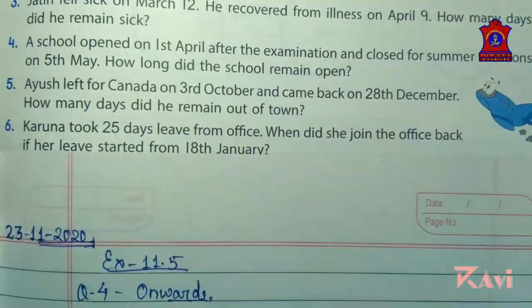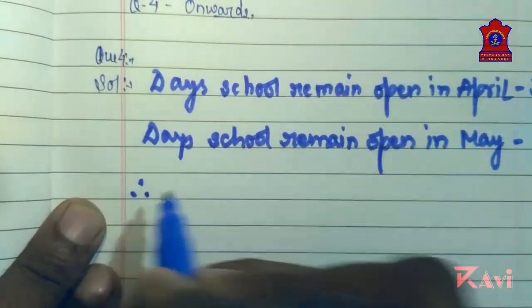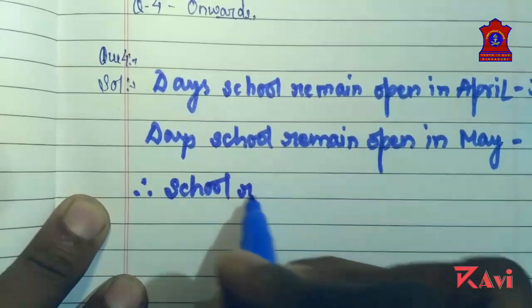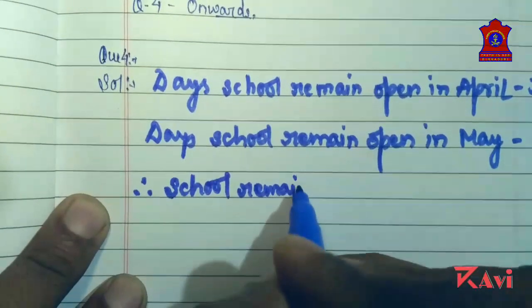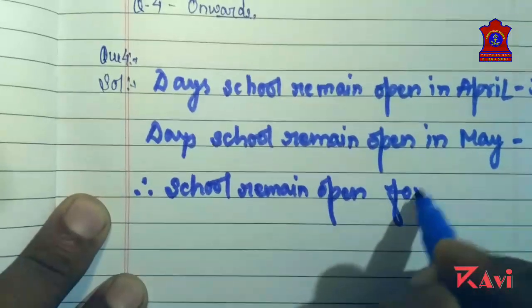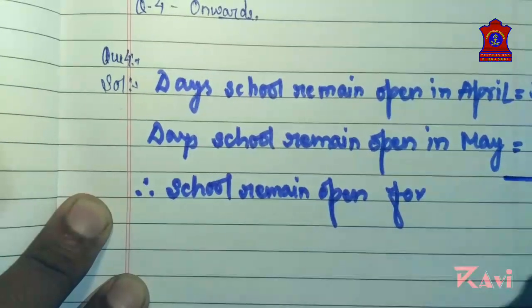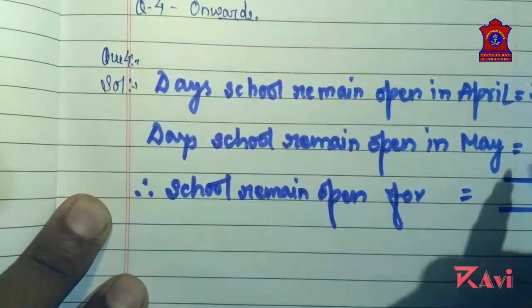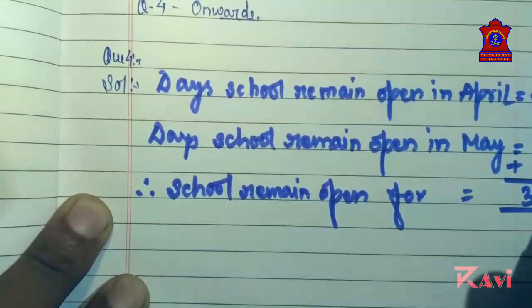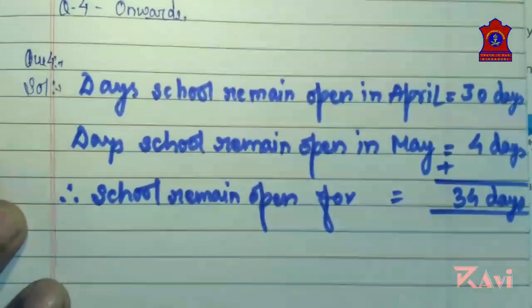Now the question is asking how long did the school remain open. Therefore, school remain open for — what will you do? We will add it. 30 plus 4 is 34 days.